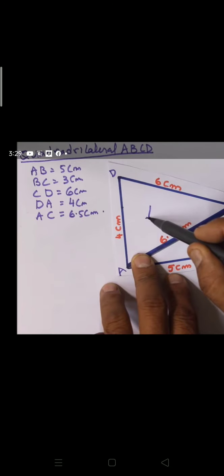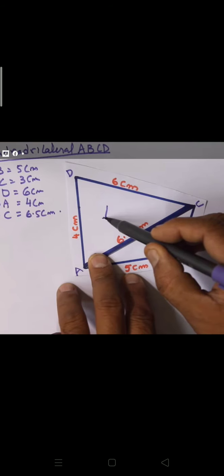Look, in this problem you have to construct quadrilateral ABCD where AB is 5 cm, BC is 3 cm, CD is 6 cm, DA is 4 cm, and diagonal AC is 6.5 cm. Always first draw a rough figure — just draw a quadrilateral, name it ABCD, write the measurements, and join the diagonal AC and write that measurement too.